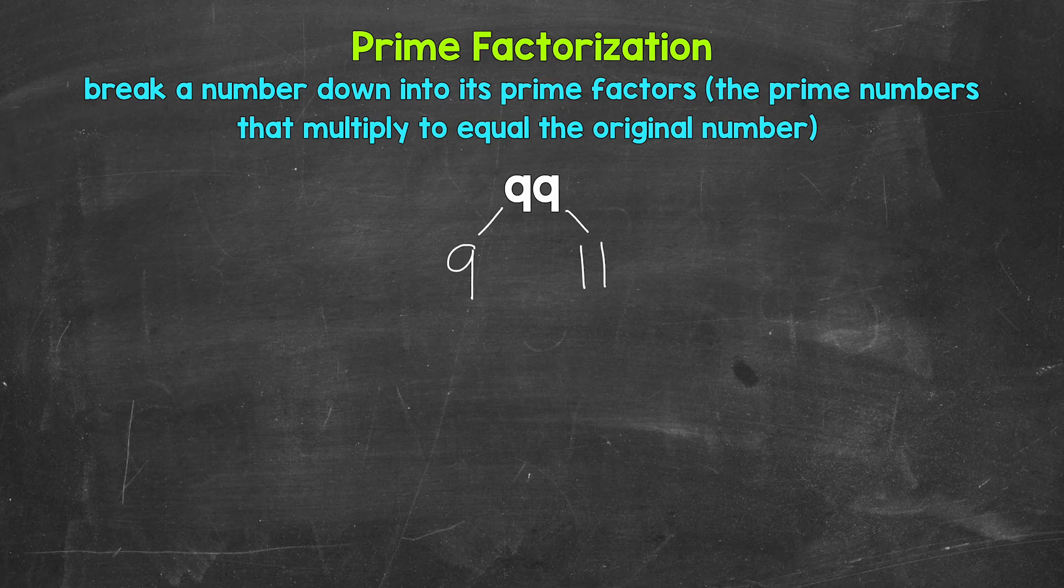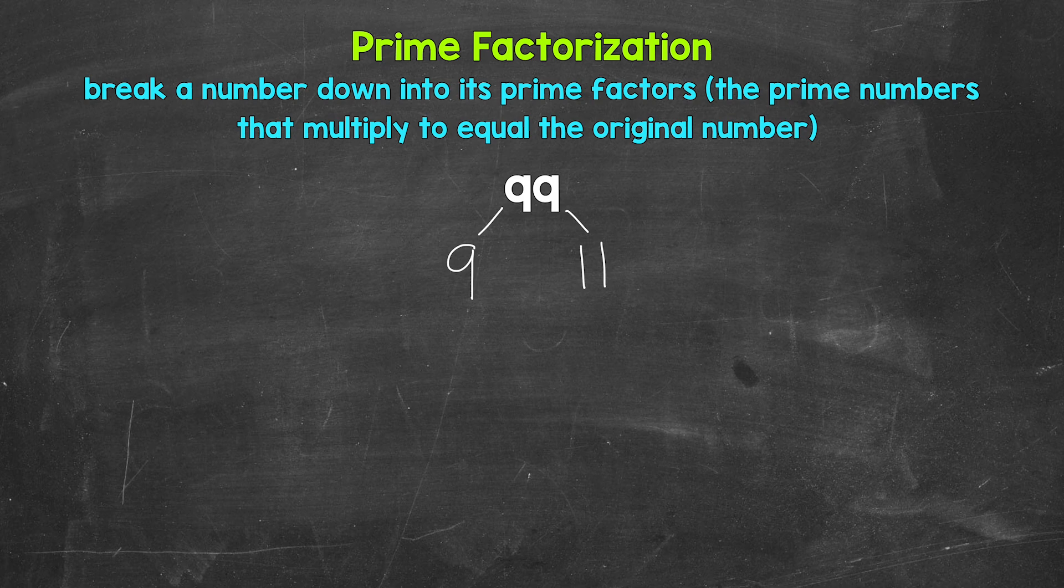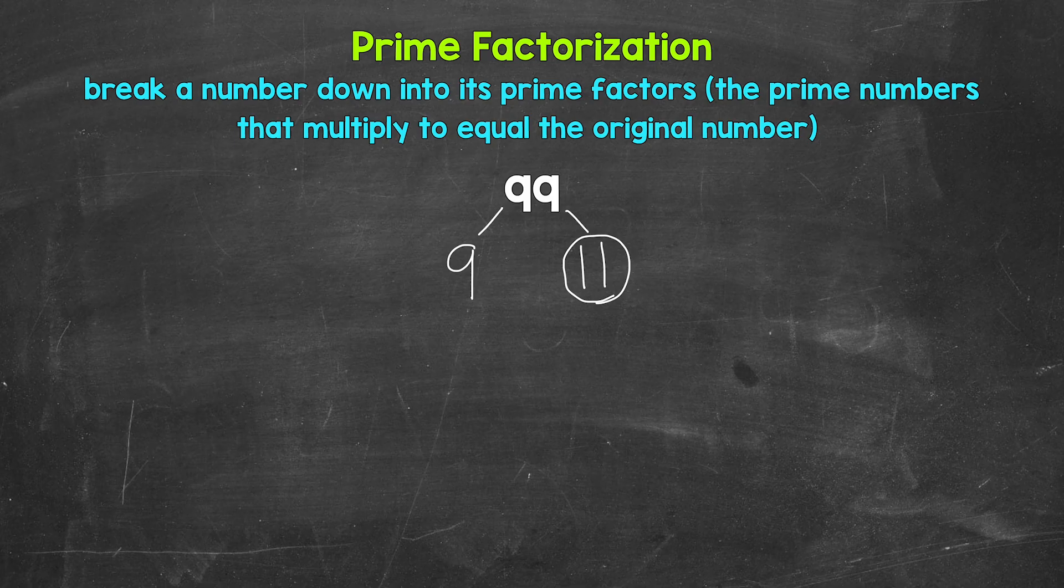Now let's continue to break this down. So we have 9 and 11. 11 is a prime number. So we are done here. We can't break that down any further. So let's circle 11 to show that we have a prime number.